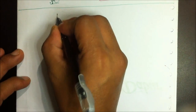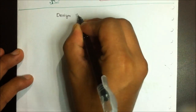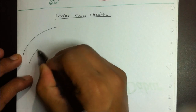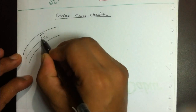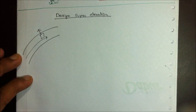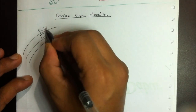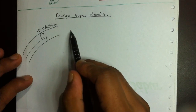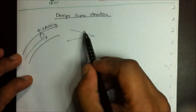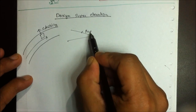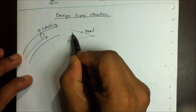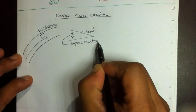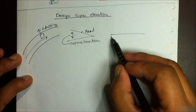Now coming up to the second part: design super elevation. Whenever we are traveling in a curve, our vehicle experiences an outward force which causes skidding — which we covered in the previous lecture. To avoid this skidding, we provide an extra elevation to the highway road, and this extra elevation is known as super elevation.